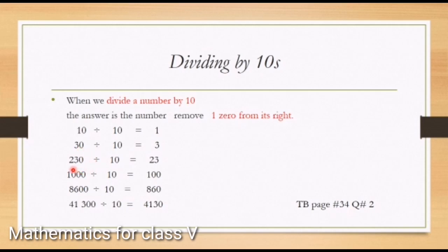Last part: 41,300 divided by 10 equals 4,130. We have two zeros in 41,300 and one zero in 10, so the answer decreases ten times and becomes 4,130.